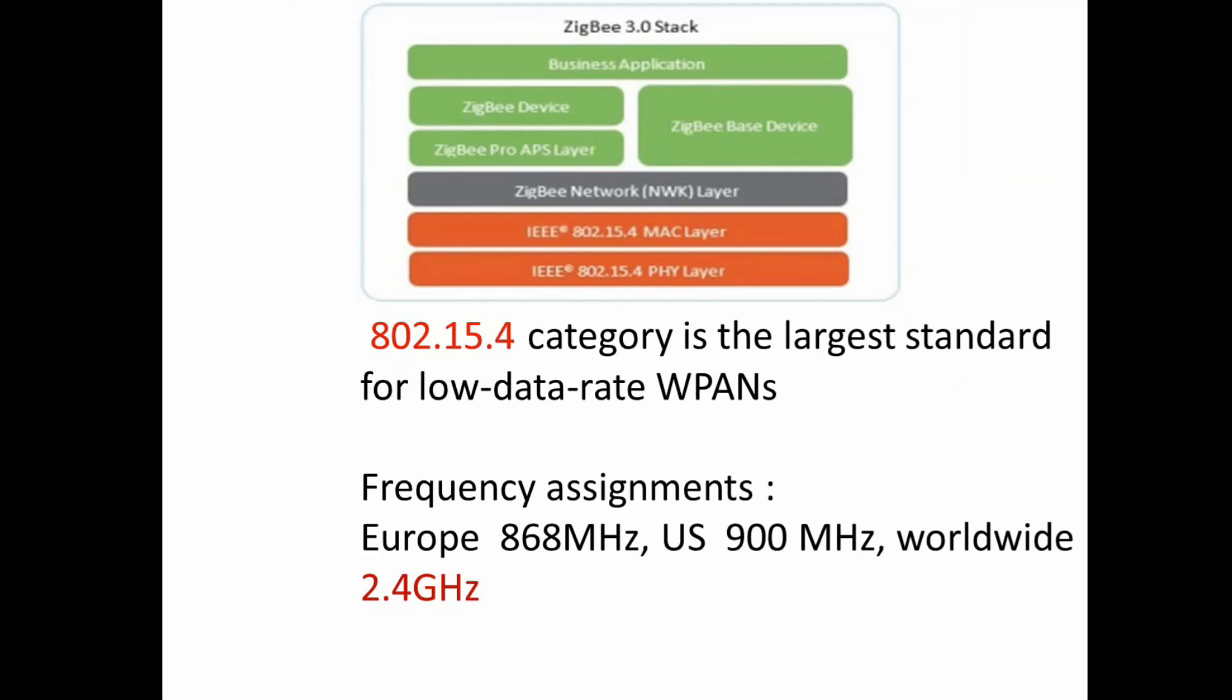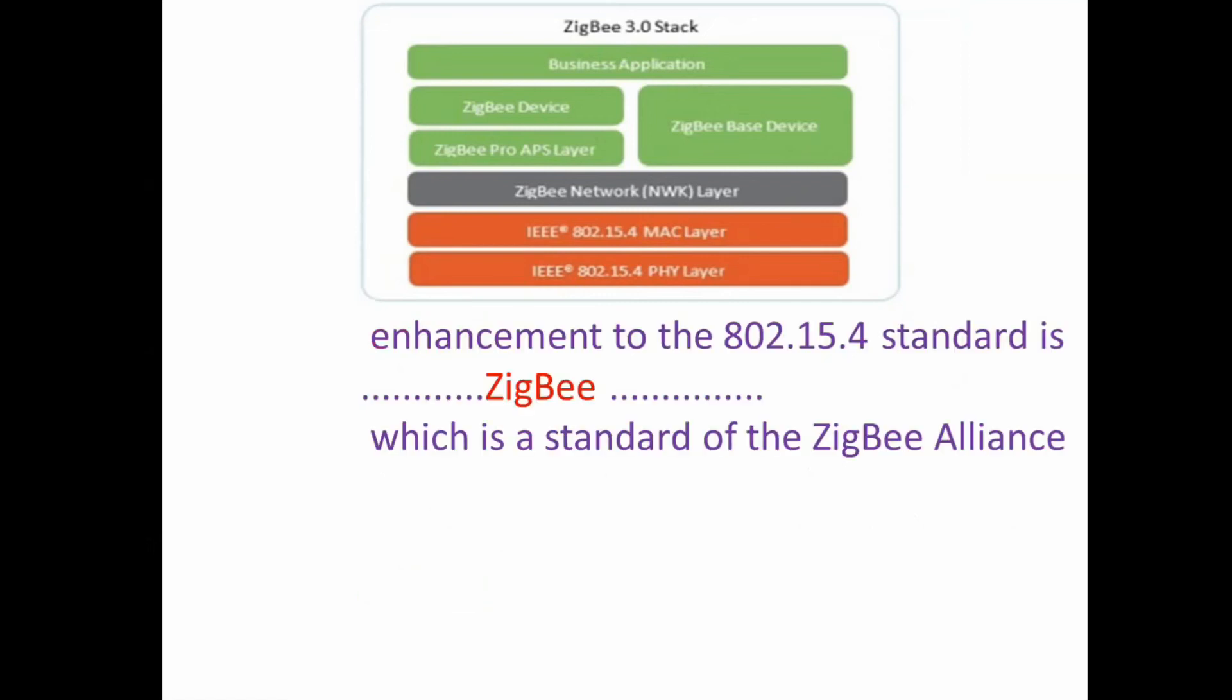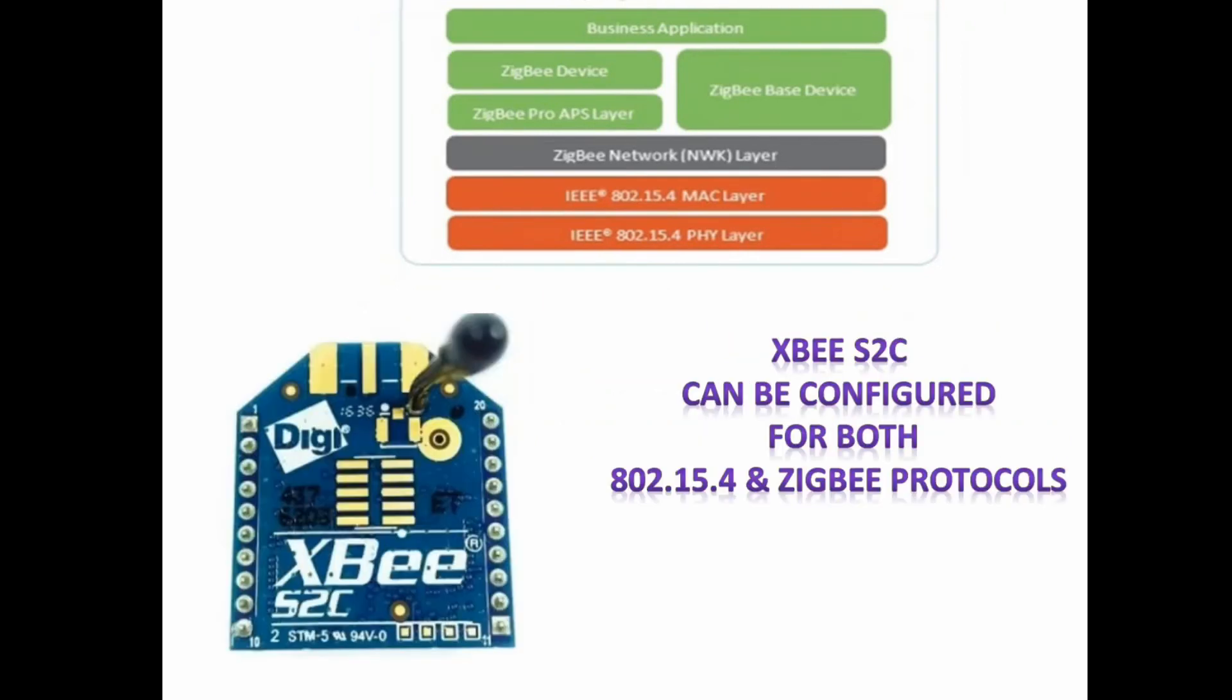In the same category, 802.15.4 is for WPAN and XBs work under this and frequency range is 2.4 GHz worldwide. ZigBee is an advanced protocol of 802.15.4.